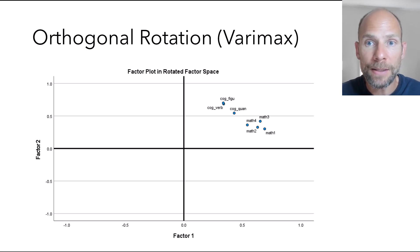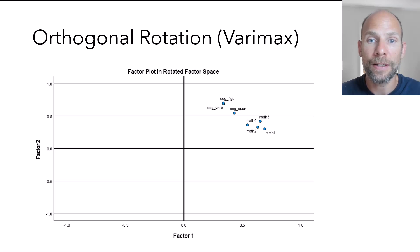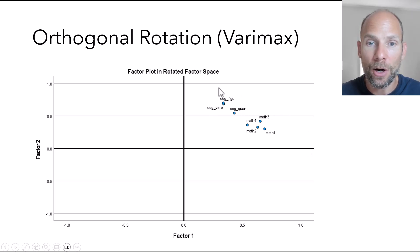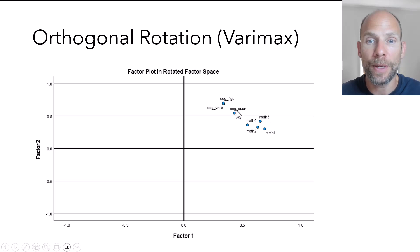Here I applied varimax rotation, which is an orthogonal rotation method in SPSS, and I requested the factor plot in rotated factor space. What you can see now is that there is a little bit more separation among those variables. The math variables are closer to the factor one axis, whereas the cognitive ability test variables are more linked to factor two. So the cognitive ability variables are more associated with factor two, and the math variables are more associated with factor one.